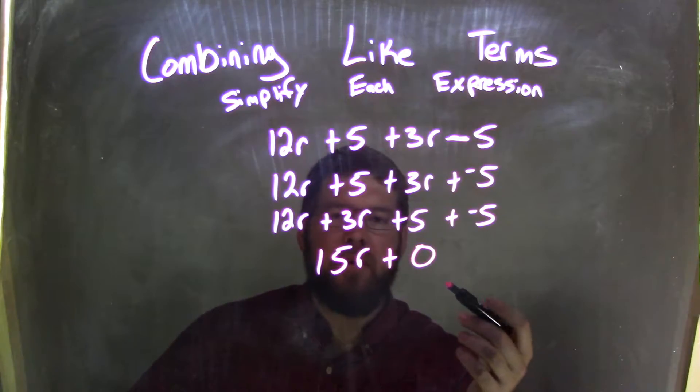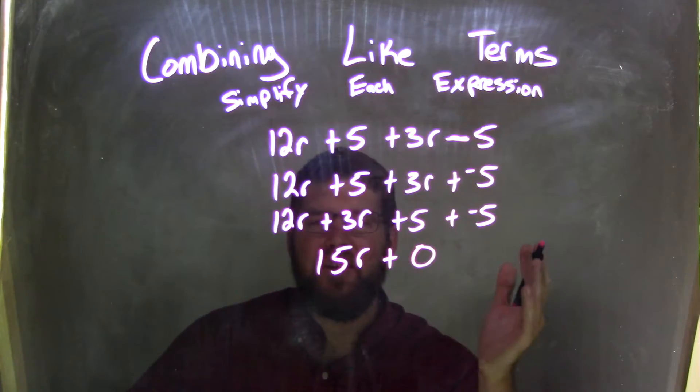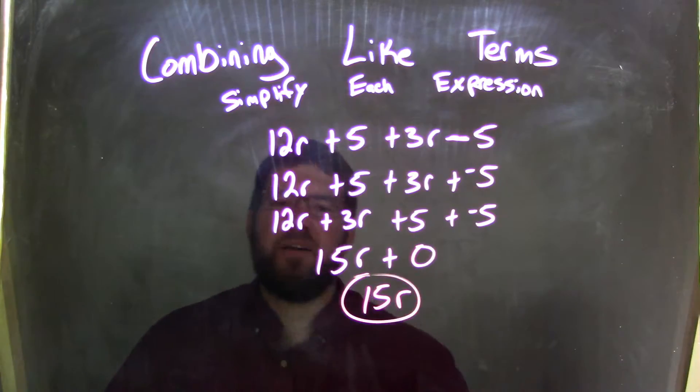Well, 15r plus 0—adding 0 doesn't change anything. It's the additive identity, right? We add 0 to anything and it doesn't change. So we're left with just 15r, and that is our final answer.